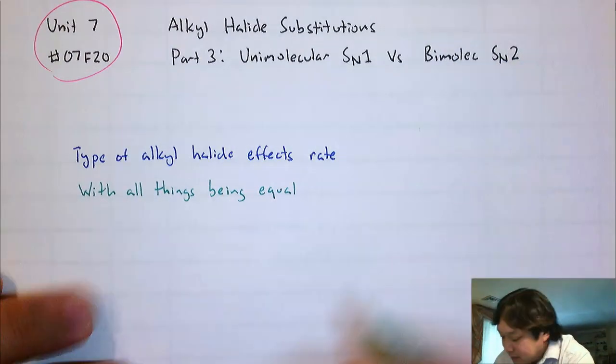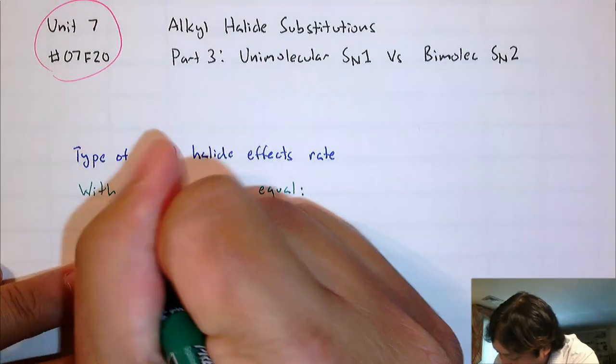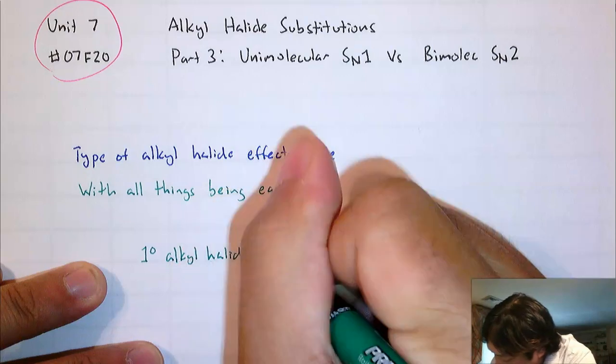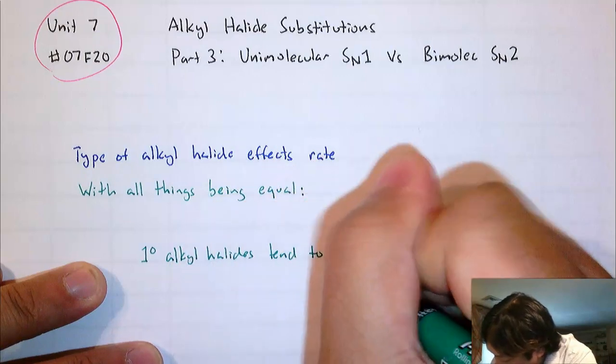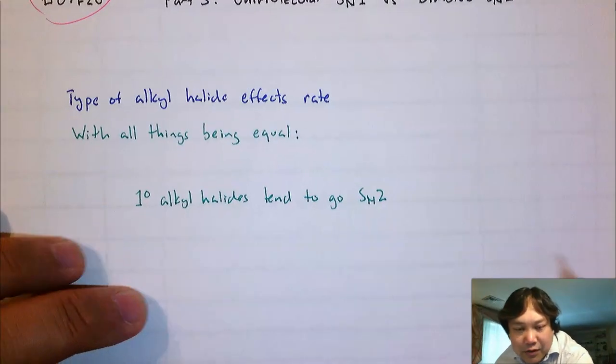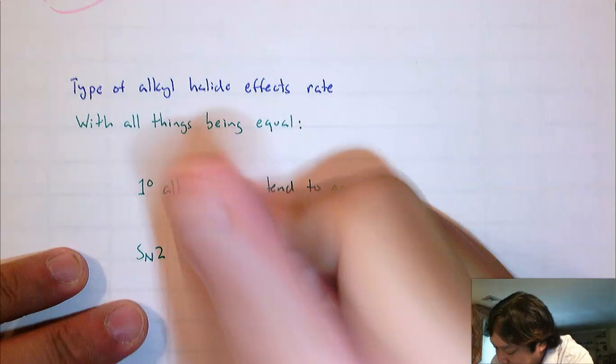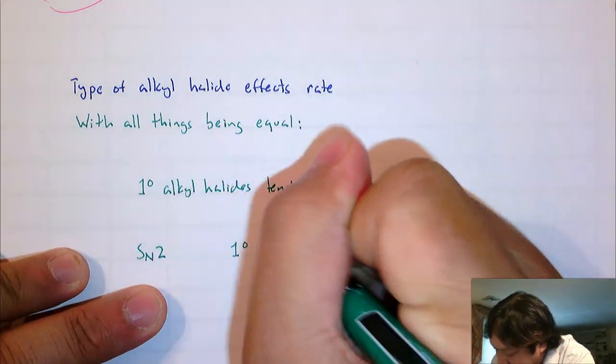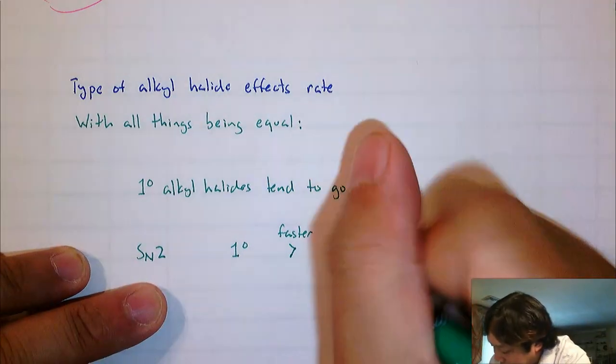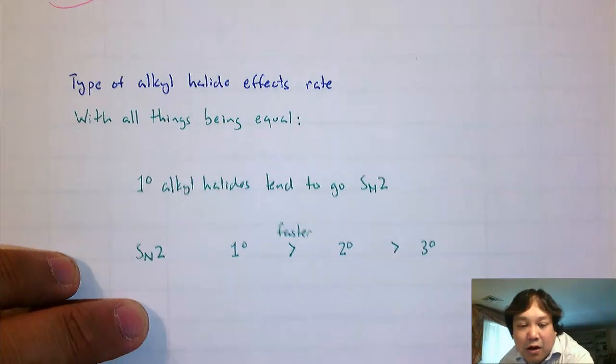We'll start with SN2. So with all things being equal, primary alkyl halides tend to go SN2. So in terms of the speed, if you're looking at SN2 processes, primary is faster than secondary, faster than tertiary. Now, why is that the case?